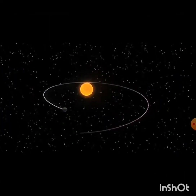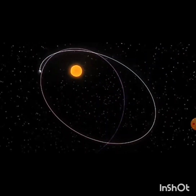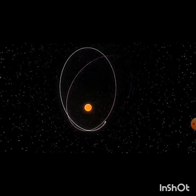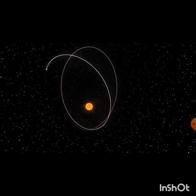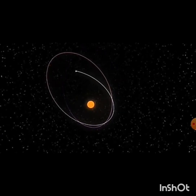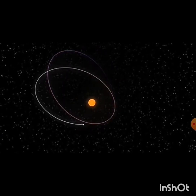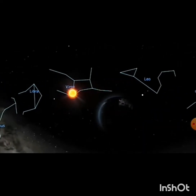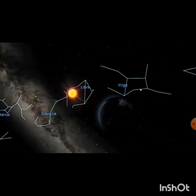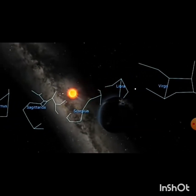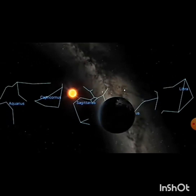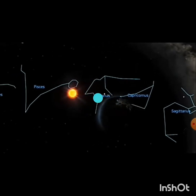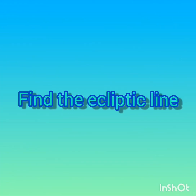We know that the Sun is the closest star to the Earth. We have learned that the Earth revolves around the Sun while it rotates by itself. Because of the revolution of the Earth, a person who observes the Sun from the Earth may feel that the Sun is moving in a particular path. This path is called the ecliptic line. Shall we observe the ecliptic line through Stellarium software?